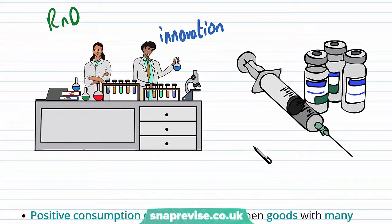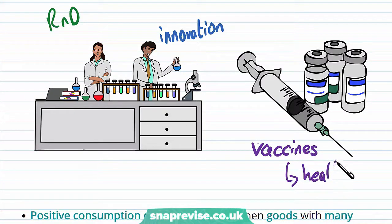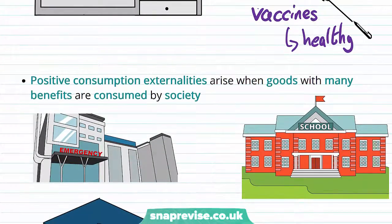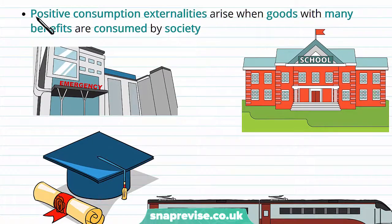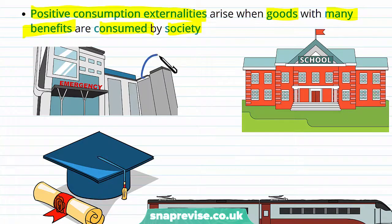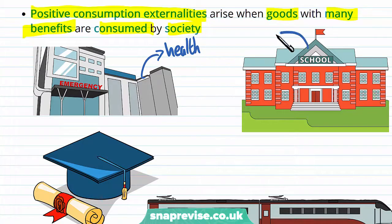Thinking about consumption, vaccines are a popular example of a consumption externality because they lead to people around you being healthier. If I myself have a vaccine, I'm not going to infect you — that's an externality which you enjoy through my consumption. These are positive consumption externalities, which arise when goods with many benefits are consumed by society, such as general healthcare making it less likely I'll become infected.